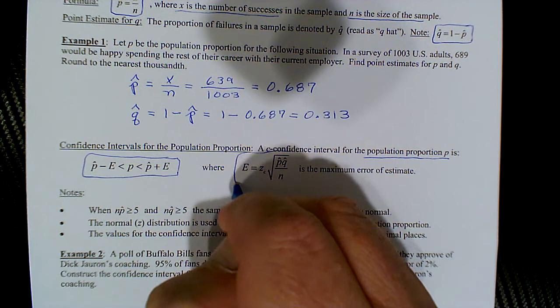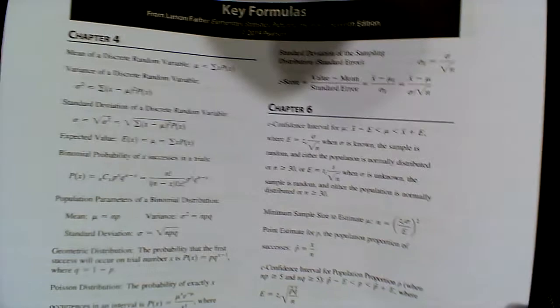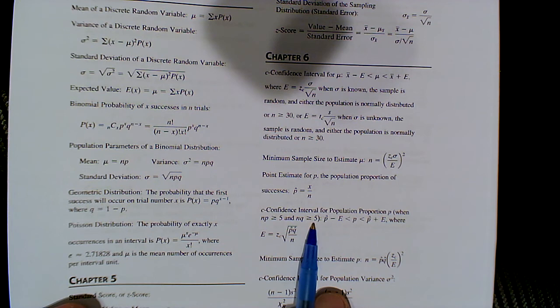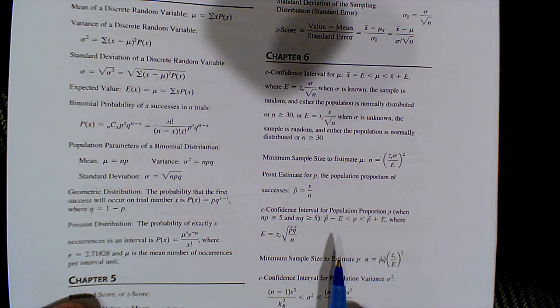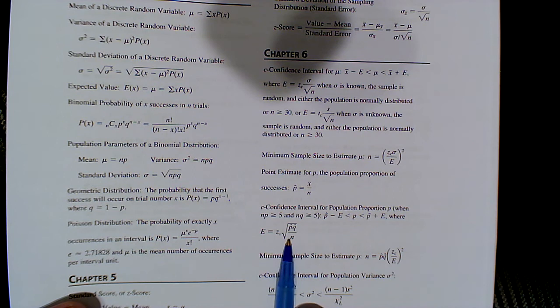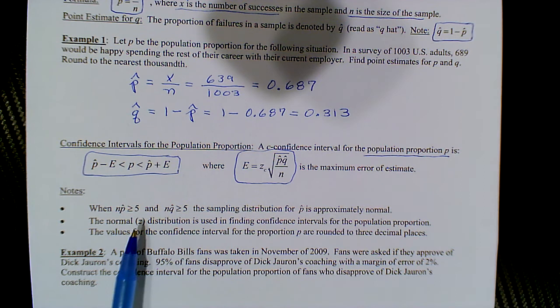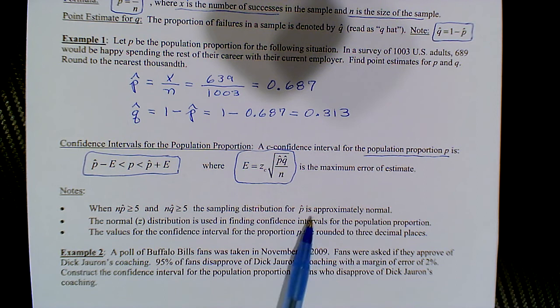These formulas are on your formula sheet under chapter 6. Note that we should check that n·p-hat and n·q-hat are both greater than or equal to 5, though we can assume this will hold for all problems we encounter. When dealing with proportions, we always use the z-distribution. The conditions n·p-hat ≥ 5 and n·q-hat ≥ 5 ensure the sampling distribution is approximately normal.